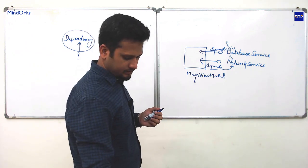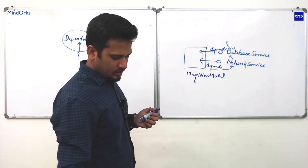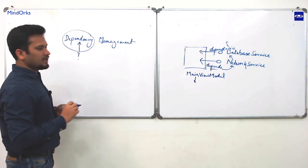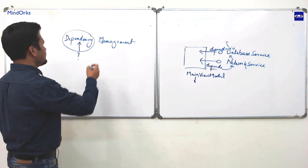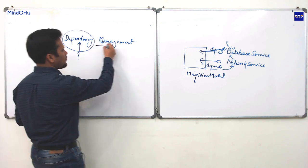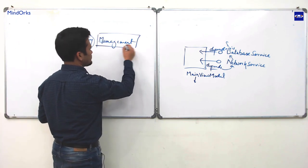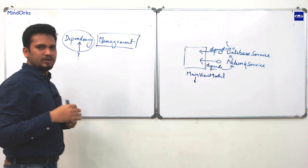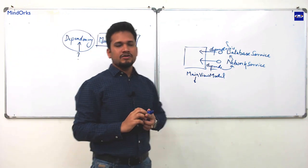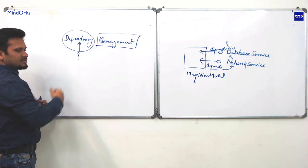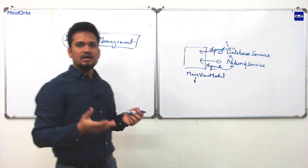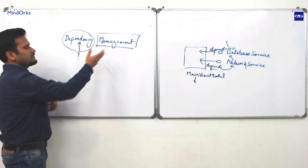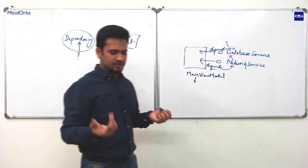Dependencies are nothing but the class instances which are required for any class to function. Now we can understand what a dependency is. Dependency management is about managing the dependencies — how they are created, where they are passed, and how they are passed.